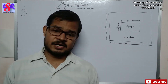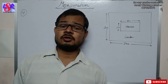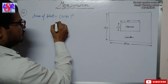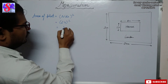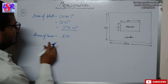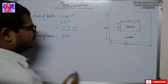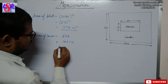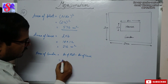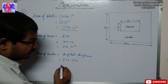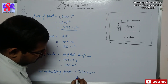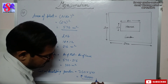Area of plot equals side squared equals 24 squared equals 576 square meters. Area of house equals length into breadth equals 18 into 12 equals 216 square meters. Area of garden equals area of plot minus area of house equals 576 minus 216 equals 360 square meters. Cost of developing garden equals 360 into 50 equals rupees 18,000.